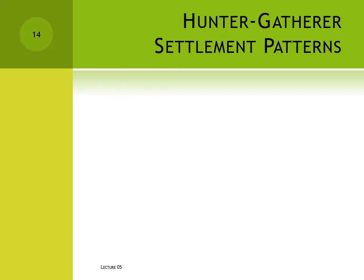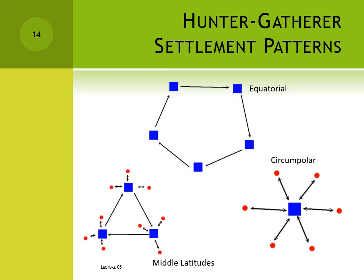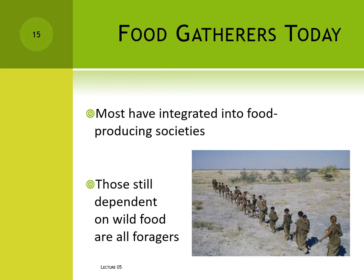We can already see a significant consequence of subsistence on the rest of the culture. Hunter-gatherer settlement patterns are dependent on the subsistence strategy, and subsistence is dependent at least in part on the environment. Today the great majority of cultures who were until recently hunter-gatherers have been integrated into modern nation-states. Most groups have settled into permanent villages and become dependent on produced food. The very few people who still actively survive through hunting and gathering are all foragers, as industrialized groups have taken over all productive environments, leaving only marginal areas like deserts.